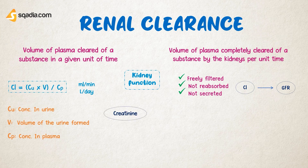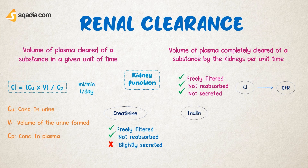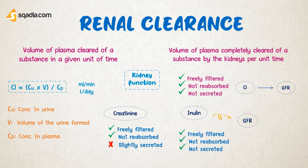These substances include creatinine, which is a product of muscle breakdown. It is freely filtered and is not reabsorbed, but it is slightly secreted, which can introduce a little error. More accurate measurements can be obtained using another compound called inulin, whose clearance is used to estimate the GFR because it is freely filtered, neither reabsorbed nor secreted — it follows all these rules. An important point is that inulin has to be injected to measure the GFR, as compared to creatinine, which is a natural product of muscle breakdown.